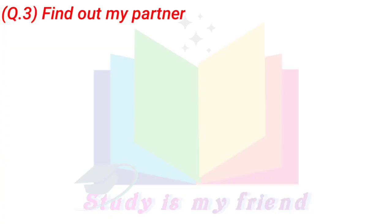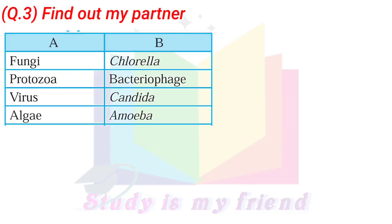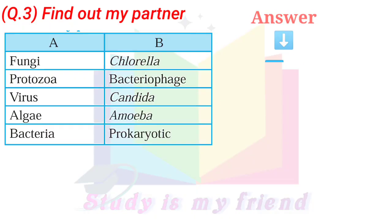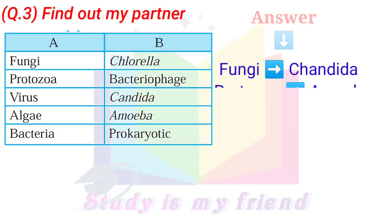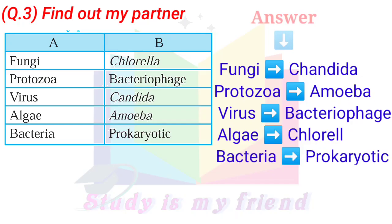Question 3: Find Out My Partner. Answer: Fungi — Candida. Protozoa — Amoeba. Virus — Bacteriophage. Algae — Chlorella. Bacteria — Prokaryotic.